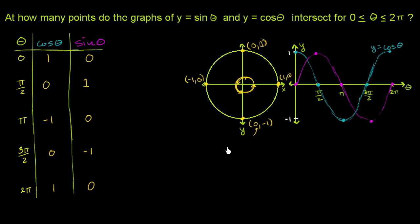Looking at the graphs, we can ask: at how many points do y equals sine of theta and y equals cosine of theta intersect for theta between 0 and 2 pi? Visually, you can see there are two points of intersection. These are cyclical graphs, and if we kept going they would keep intersecting, but over this 2 pi range there are exactly two intersection points — one between 0 and pi/2, and one between pi and 3pi/2.